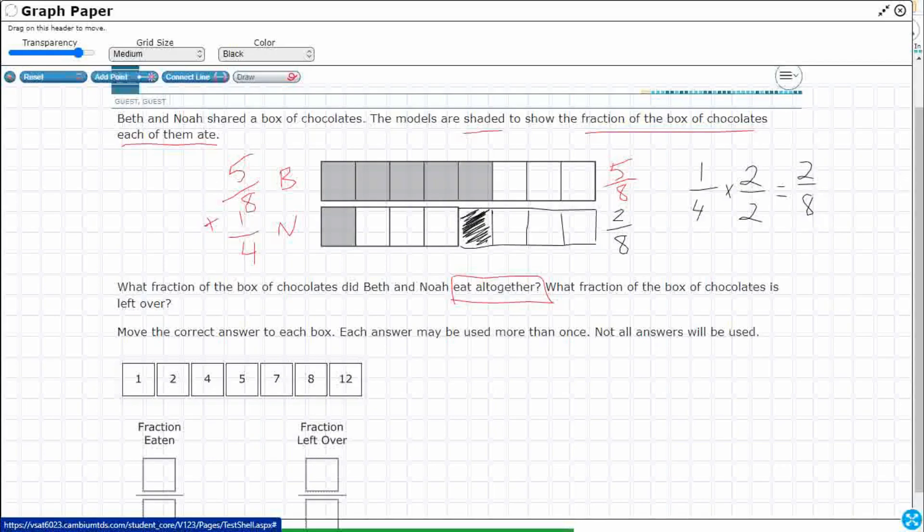So you multiply straight across. 1 times 2 is 2. 4 times 2 is 8. All right. So I could do that now.